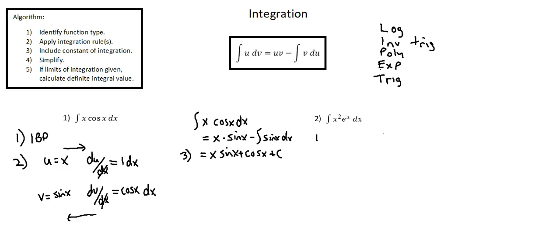Step one: identify the function type. I see I'm working with the product of two functions. I don't see a relationship for which I can apply substitution, so I'm going to use integration by parts.